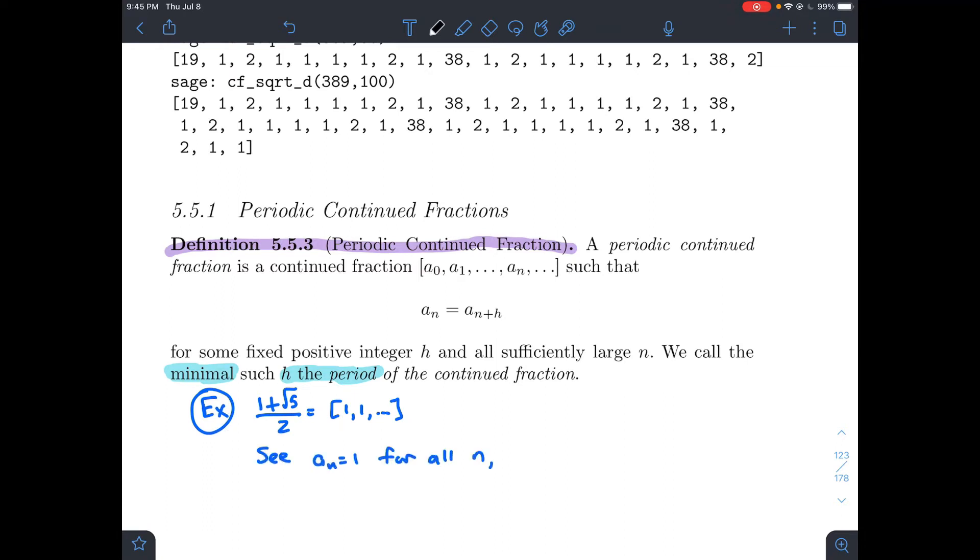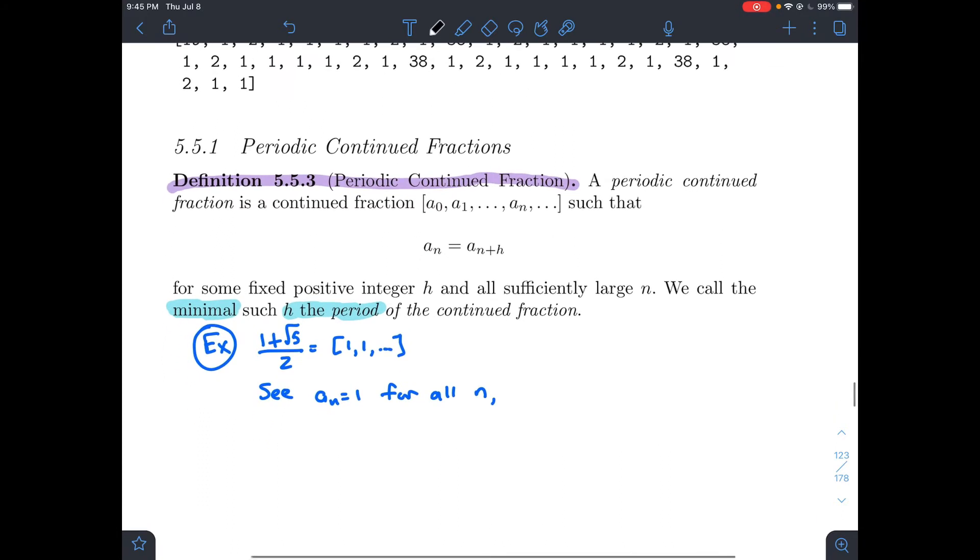The period of this thing ought to be 1. I see that the input of the continued fraction, or each component, is always 1. Therefore the period is 1, because all the entries an equals an plus 1 for every single n.